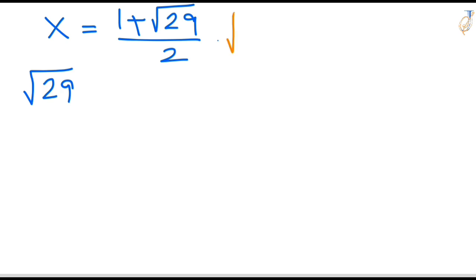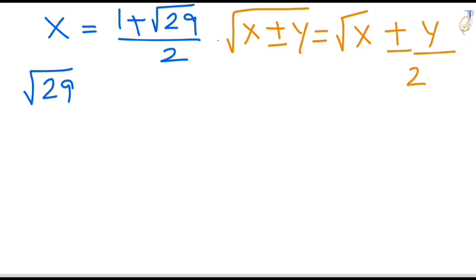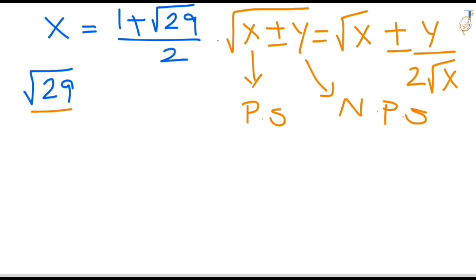I'm going to show you a super trick for non-perfect square roots. The formula is: square root of (x plus or minus y) equals square root of x, plus or minus y divided by 2 times square root of x — where x is a perfect square and y is a non-perfect square. For root 29, convert it into a perfect square plus a remainder. The nearest perfect square to 29 is 25, so write 29 as 25 plus 4.